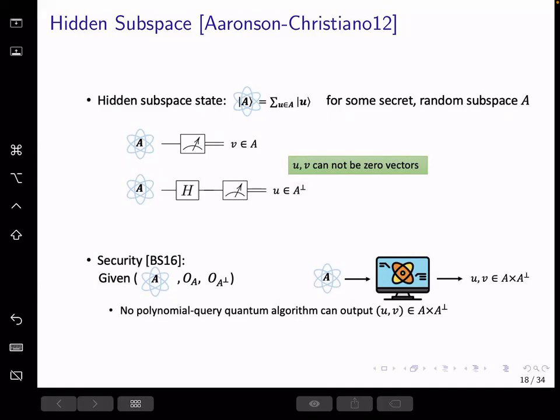A subspace state, ket A, is an equal superposition of elements in A, and subspace states have the following properties. If we do QFT to the state, we get its dual subspace state with vectors in A perp. Moreover, we should consider the following problem.